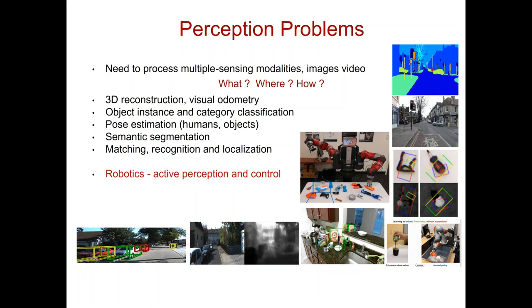Then there is the problem of recognizing object categories and instances — trying to get hold of the semantic content in images, estimating pose. Sometimes it's not enough to just say there is a car in an image; you want to know the orientation, heading, and where the object is going, which is very important for prediction. Furthermore, you'd like to understand the context where objects reside, which is provided by semantic segmentation — the problem of assigning a label to every pixel in an image. You not only know about objects but also about roads, trees, and buildings.